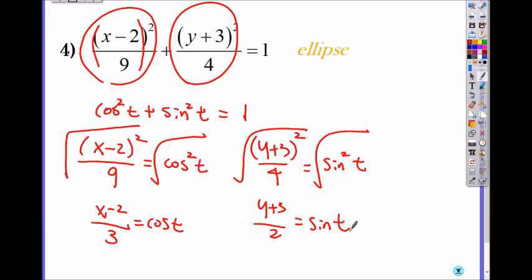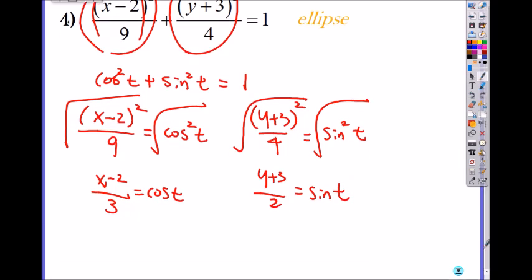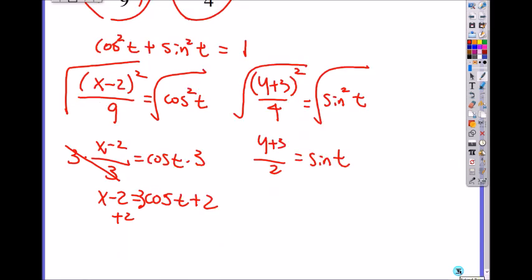Then, from here and from there, you can solve for x and y. So first move 3 by multiplying by 3, so I get x minus 2 equals to 3 cosine of t. And now I add 2. So I get my x equals to 3 cosine of t plus 2.